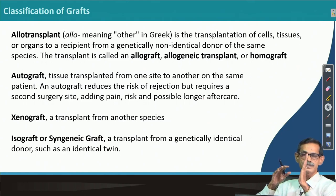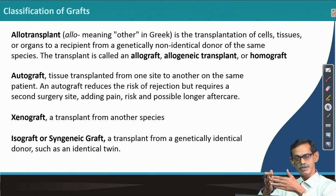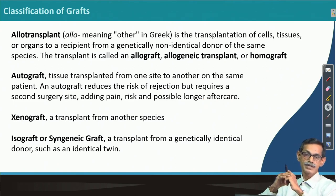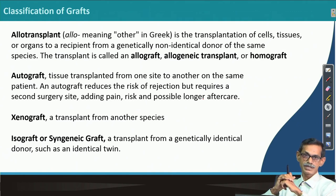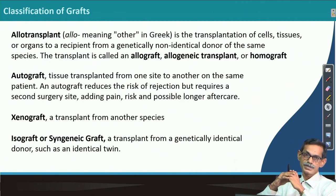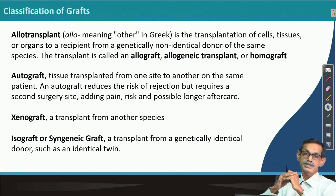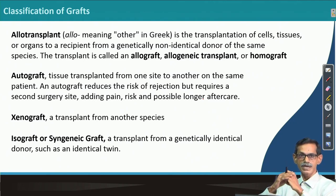Autograft means tissue transplanted from one part of the body to another part of the same individual — for example, in heart artery operations, or skin transplantation where burned areas are covered with skin from normally covered parts of the body. Earlier, people thought about xenograft — organ transplantation from a different species, such as pig to human or monkey to human.